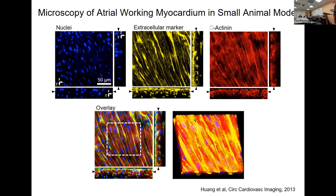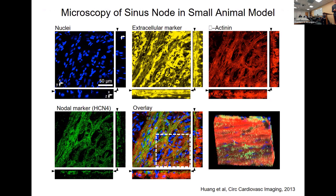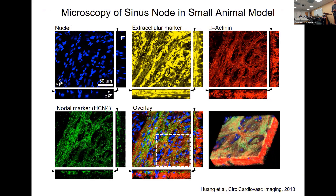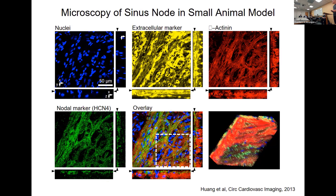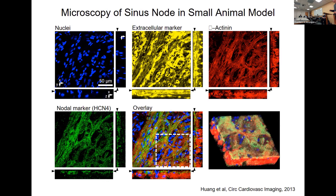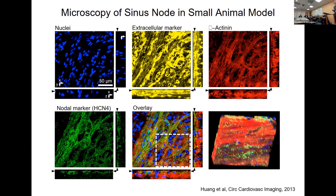For the nodal tissue — sinus node and AV node — it looked very similar in rodents. We used a marker to confirm that this is nodal tissue. In rodents, the nodal tissue is a bit more on the surface than what we saw later in humans and in larger animals. But the reticular pattern — these openings with plenty of fibroblasts located in between — is characteristic and was confirmed across all species. Instead of having a nicely striated pattern, we have this reticular pattern. This concept guided us to move forward toward human studies.